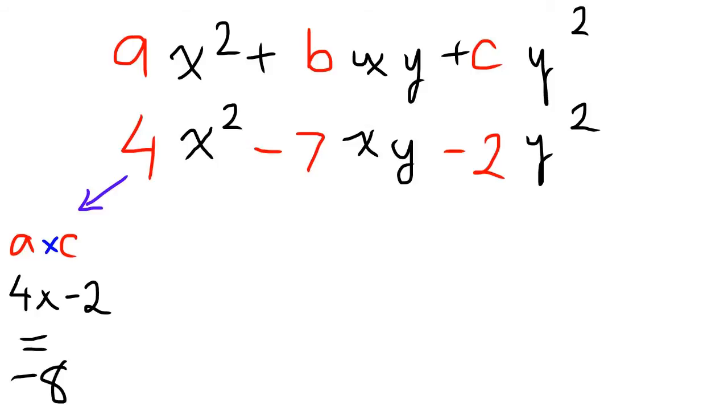As we got negative 8, what we do is find two numbers that multiply together to get negative 8 and add together to get negative 7.